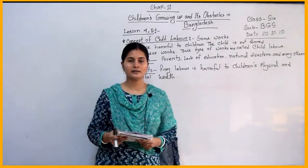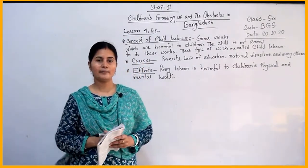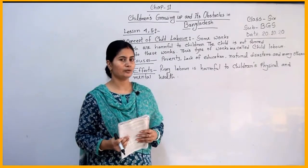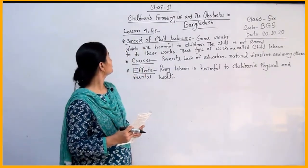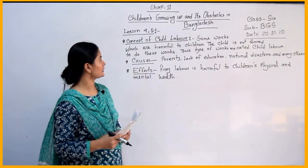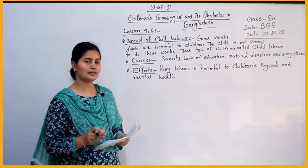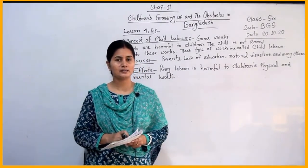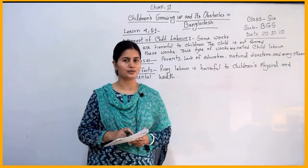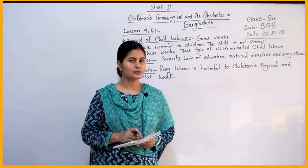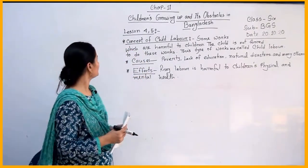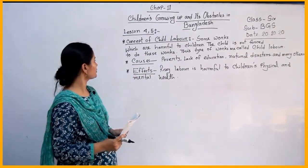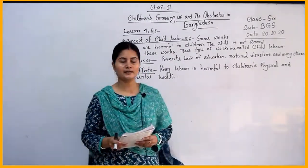In Chapter 10, we have learned about Children's Rights. And in Chapter 11, we will learn about Children's Growing Up and Its Obstacle in Bangladesh. Last class, we learned about what is socialization and the agents or mediums of socialization. Today we will cover lessons 4 and 5: the concept, causes and effects of child labor.